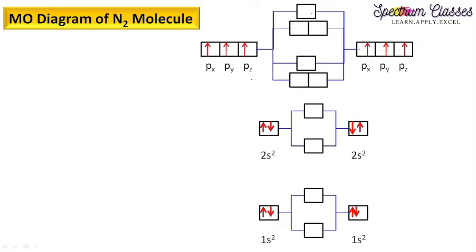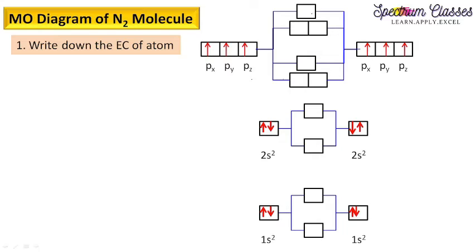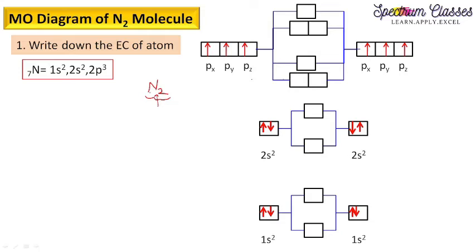Let's start by drawing the molecular orbital diagram of the nitrogen molecule. The first important step is to write down the electronic configuration for nitrogen. This is a homonuclear diatomic molecule, meaning two nitrogen atoms — homo means same — two nitrogen atoms combine together to form a nitrogen molecule.